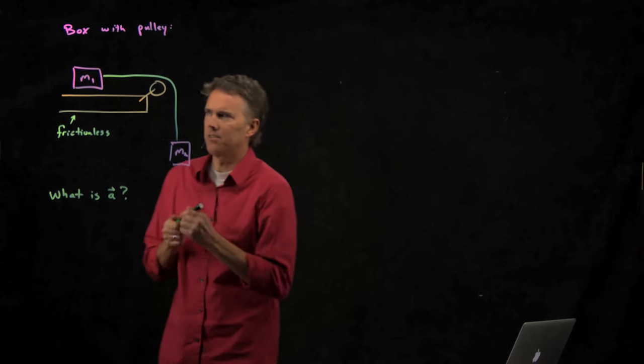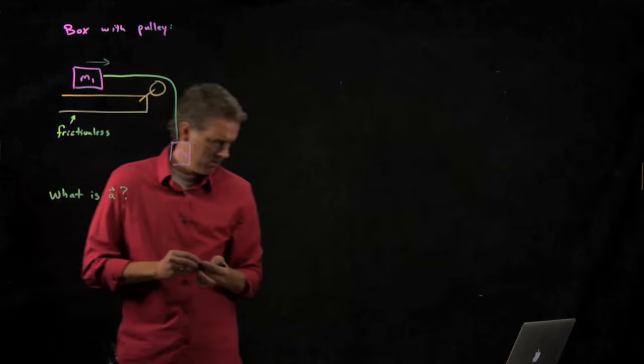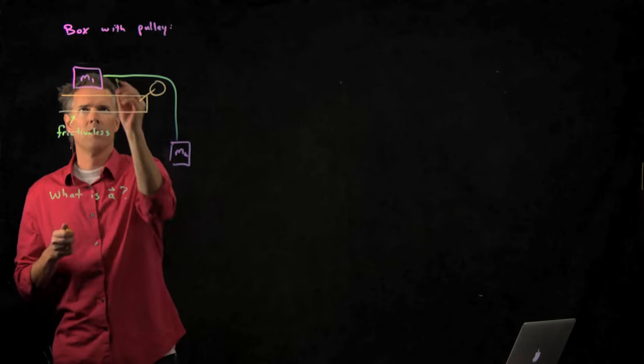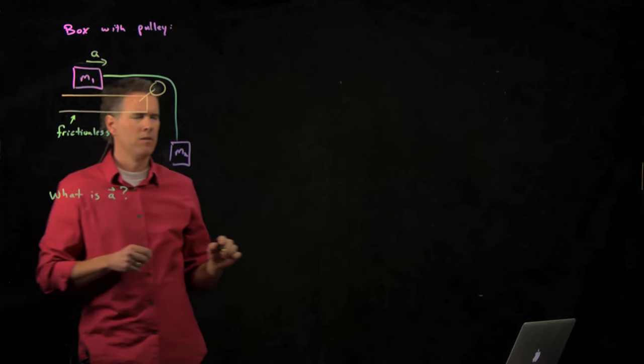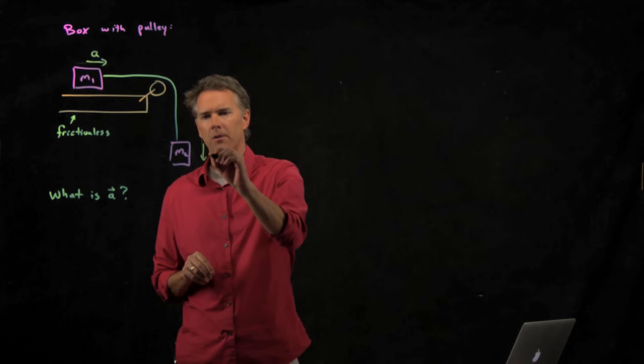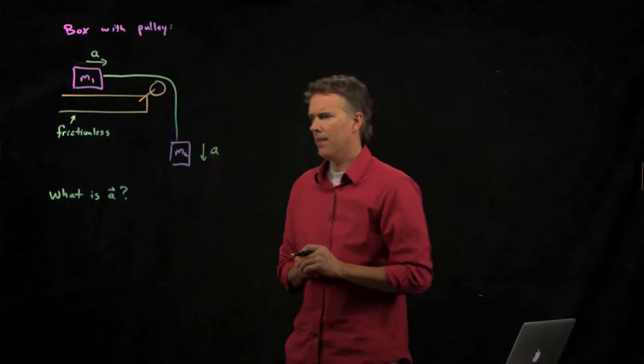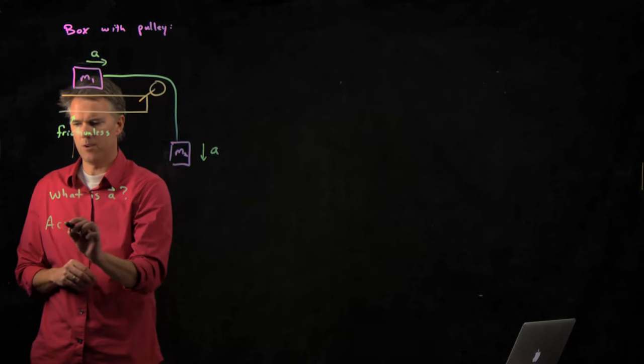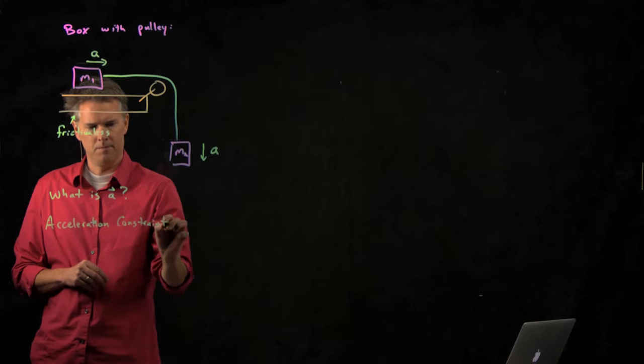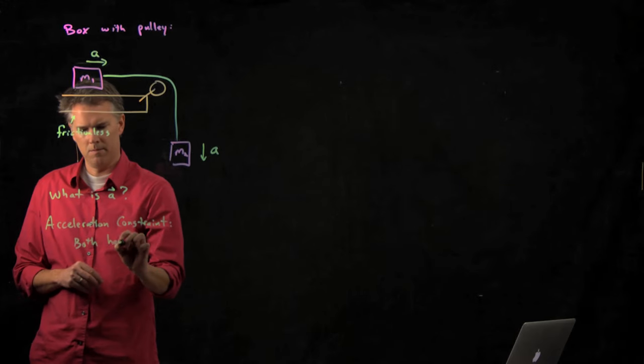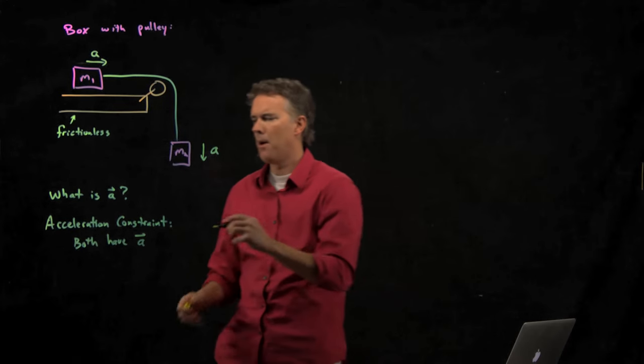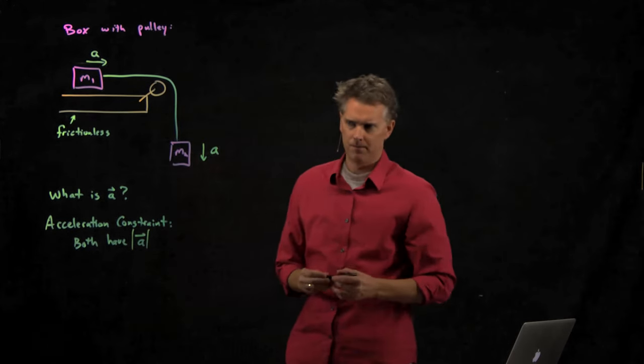If this box is accelerating to the right with A, what is this block doing? Accelerating downward with A. And this is called an acceleration constraint. They are tied together. They both have the same acceleration, different directions of course, but they both have the same magnitude of acceleration.